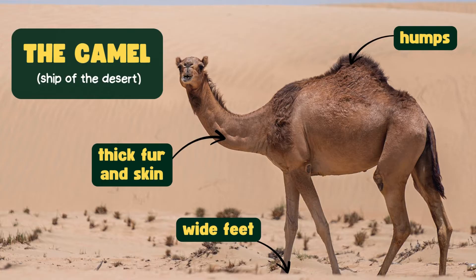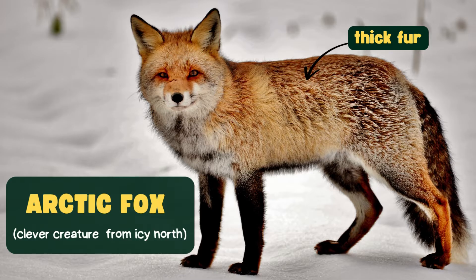Camels, also known as the ships of the desert, have humps on their backs that store fat. This fat can be turned into energy and water when they need it. They also have wide feet to walk easily on sand and thick fur to keep them cool in the hot sun. Arctic foxes, a clever little creature from the icy north, have thick fur that keeps them warm in freezing temperatures. In winter, their fur turns white to blend in with the snow, and in summer, it changes to brown or gray to match the Earth.